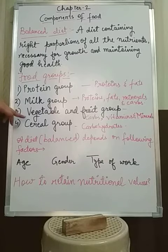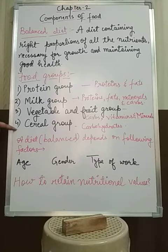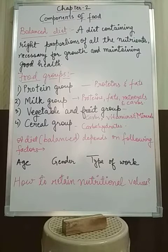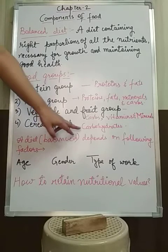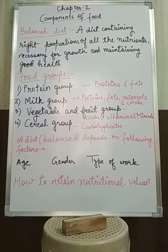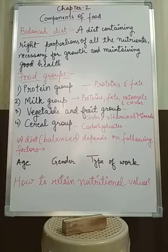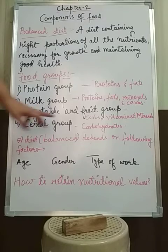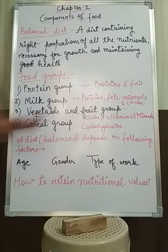This food group mainly includes vegetables and fruits. The last one, the 4th group, is the cereal group. This cereal group contains food items rich in carbohydrates only — they include rice, chapati, bread, noodles, etc., because all these food items are rich in carbohydrates.